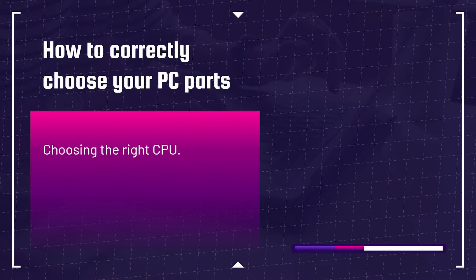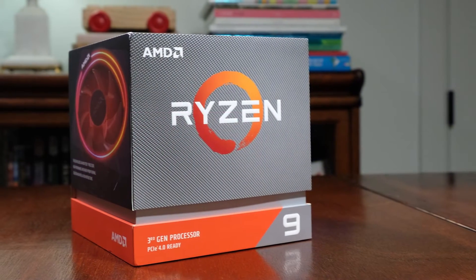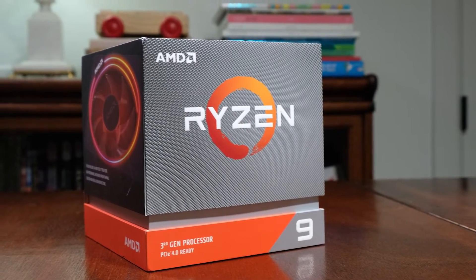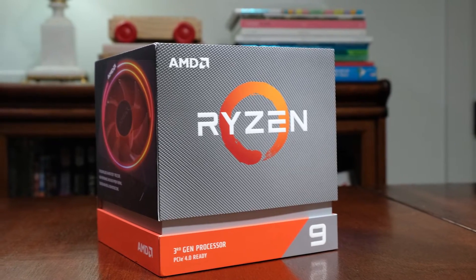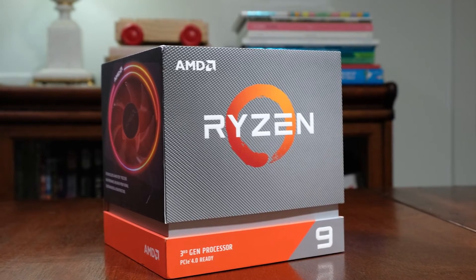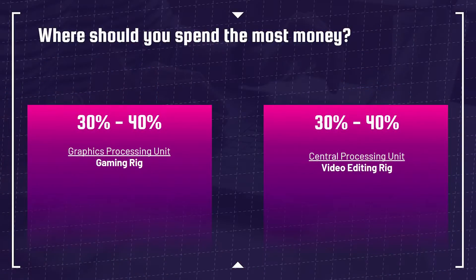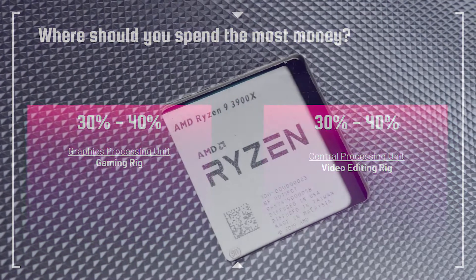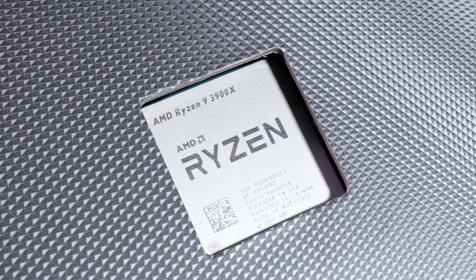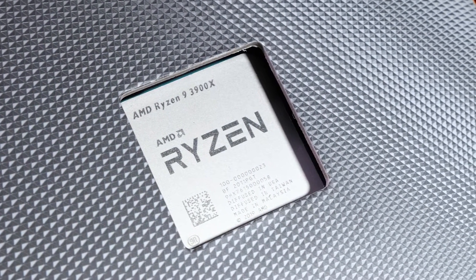First up, the CPU or the processor. The CPU is the first part you should select, and in my opinion, this should be the most expensive component you purchase, accounting for roughly 30% of your budget. This is contrary to building a gaming PC — most gaming PC builders would recommend allocating that most expensive spot for the GPU. But when it comes to video editing, the CPU has a more critical role, followed by the GPU, and we'll discuss more on that later.